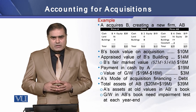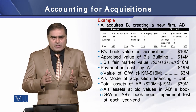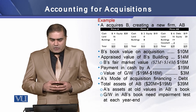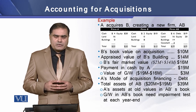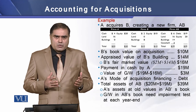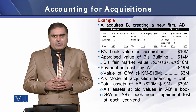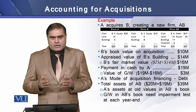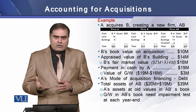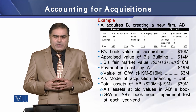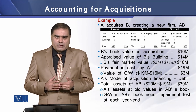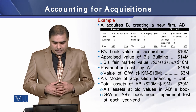The total assets of the new firm AB equal $39 million. This is the sum of $20 million of the acquirer's total assets and $19 million of the fair market value of company B, which is essentially the purchase price of company B.